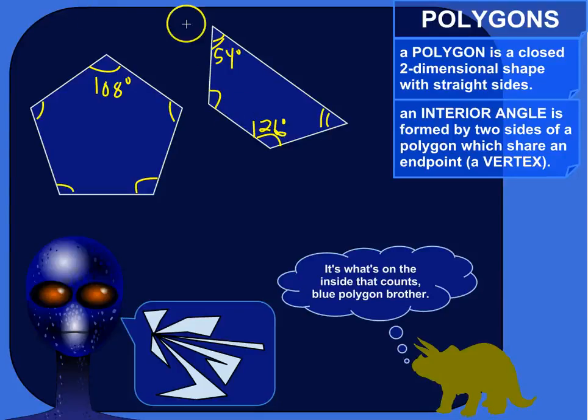Alright, so the interior angles of a polygon are the angles that are formed by two sides of a polygon. So the two sides that form, or which share an endpoint, also known as a vertex.